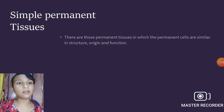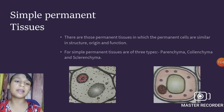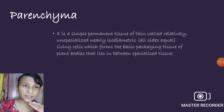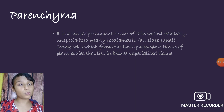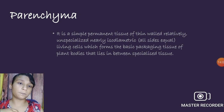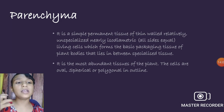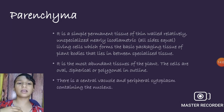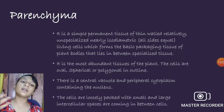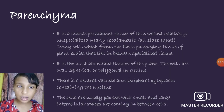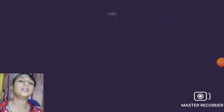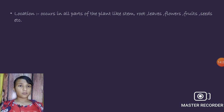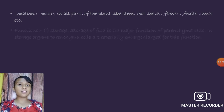Simple permanent tissues are of three types: parenchyma, colenchyma, and sclerenchyma. Parenchyma cells are thin-walled and isodiametric — they are the packaging tissue and the most abundant tissue. Their shape is oval, spherical, or polygonal. They have a large central vacuole, and cytoplasm containing the nucleus. Parenchyma occurs in all parts of the plant — stem, leaves, flowers, fruits, etc.